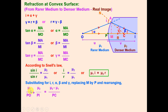Here, point M is replaced by pole P because the aperture is small, so M lies very close to P. This allows all distances to be conveniently measured from the pole. So MO becomes PO, MI becomes PI, and MC becomes PC.